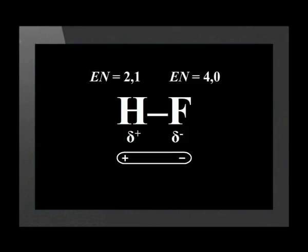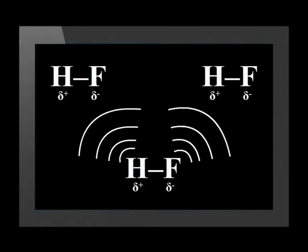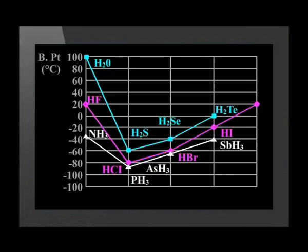The very high electronegativity value of fluorine causes the shared electron pair to be found very close to the fluorine atom. The result is a strongly polar molecule. The molecules then attract one another in what is basically a strong dipole-dipole attraction. Note that hydrogen bonding is specific to certain molecules, whilst dipole-dipole attraction occurs between any polar molecules.